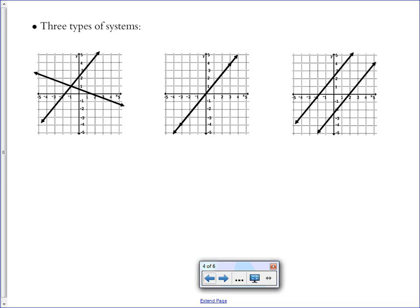There are three types of systems. The first one that we looked at is like the first example on this slide. It's two lines that cross only in one place. And so this system has only one solution. It's the x, y point where they cross. It's called an independent system. If you're asked to classify your system, you would want to call it independent.